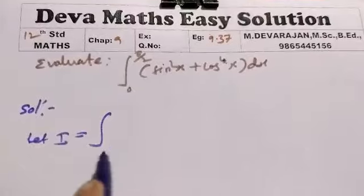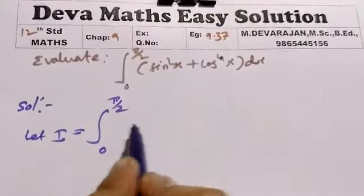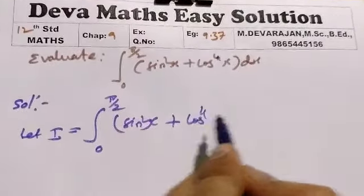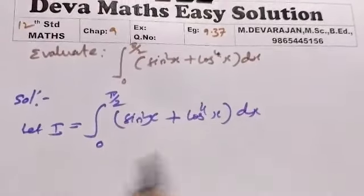Let I equal integral from 0 to π/2 of sin squared x plus cos to the power 4x dx.